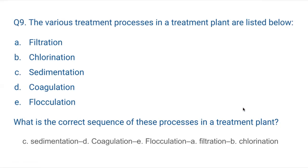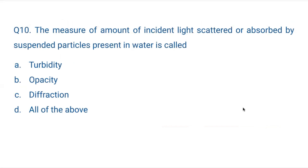Final question, Question 10: The measure of the amount of incident light scattered or absorbed by suspended particles present in water is called — A. Turbidity, B. Opacity, C. Diffraction, or D. All of the above. Incident light on water is either scattered or absorbed due to the presence of suspended particles, and this adds turbidity to the water. The answer is A — turbidity.